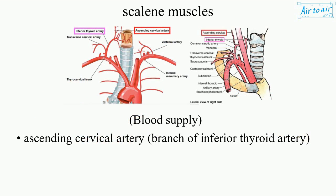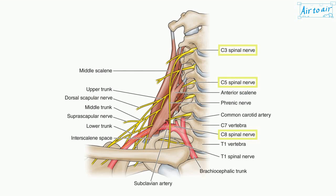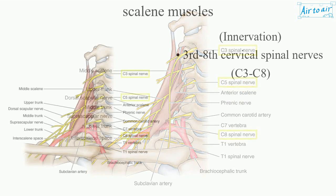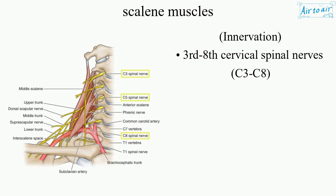Blood supply: ascending cervical artery, a branch of the inferior thyroid artery. Innervation: third to eighth cervical spinal nerves, C3–C8.